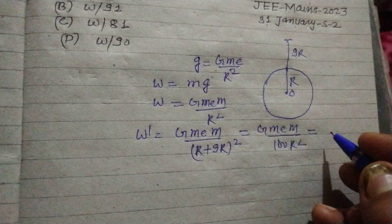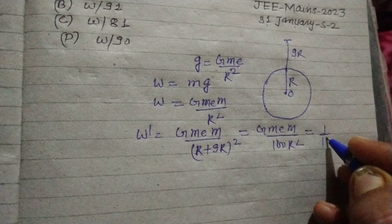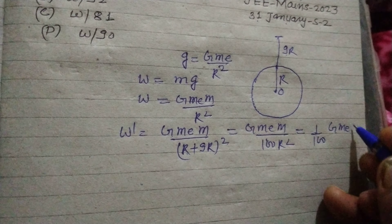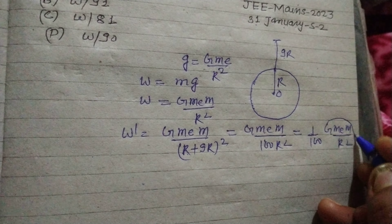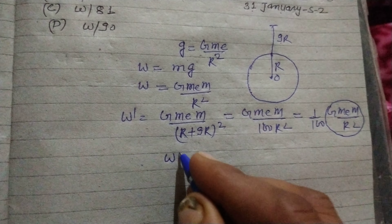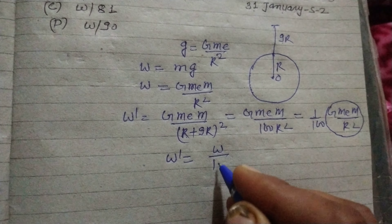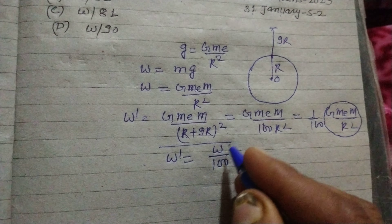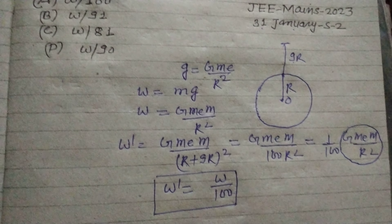We can write this as (1/100) × (GmE / R²), and since GmE / R² is W, therefore W' = W/100. The answer to this question is option A.